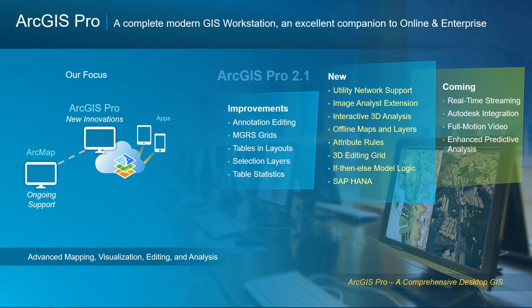ArcGIS Pro is a complete modern GIS workstation, as well as an excellent companion to ArcGIS Online and Enterprise. ArcMap will continue to be supported for a long time to come, but our innovation in desktop GIS is going into ArcGIS Pro. The most recent release, 2.1 in January, has a whole host of new capabilities, including support for the new utility network, the new image analyst extension, as well as interactive 3D tools for analysis and much more. It's very active, widely used and adopted, and a key third aspect of our platform alongside Online and Enterprise.